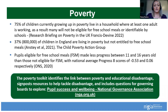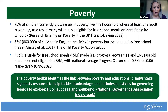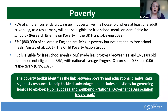On poverty: 75% of children currently growing up in poverty live in a household where at least one adult is working and as a result may not be eligible for free school meals. So 37% of children in England are living in poverty but aren't entitled — it's not quite as easy to identify that particular pupil group. Pupils who are eligible for free school meals made less progress than their peers, and it's really important to think about how poverty impacts on the educational disadvantage of those pupils.